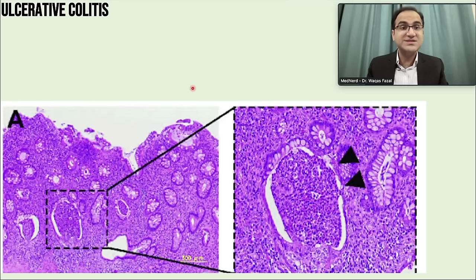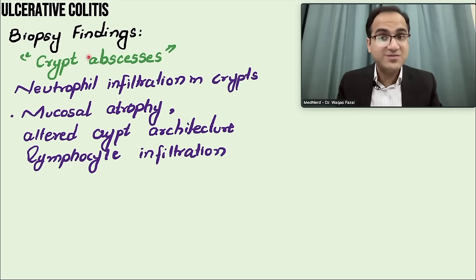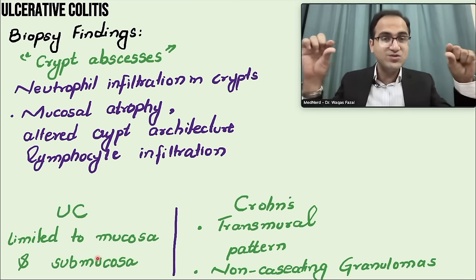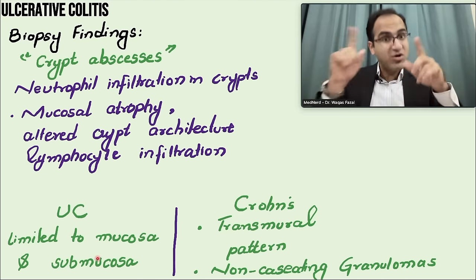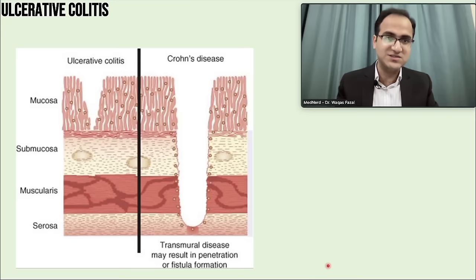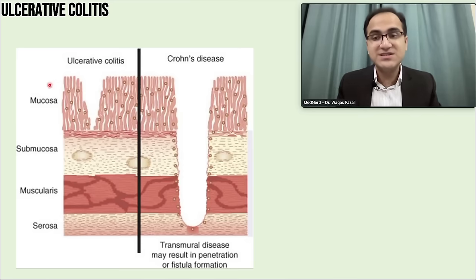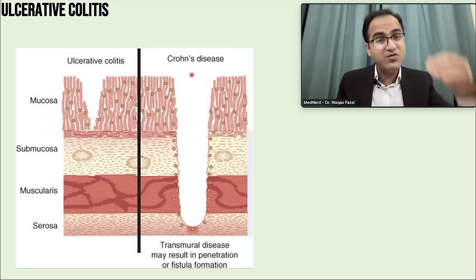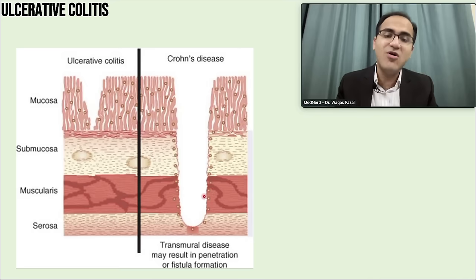Another important distinction: ulcerative colitis only involves the mucosa and submucosa — it does not involve the full thickness of the intestinal wall. Crohn's disease, on the other hand, has transmural involvement — it involves all layers of the intestinal wall and forms non-caseating granulomas. Because of this transmural involvement, Crohn's disease results in fistulas, perforations, and strictures.